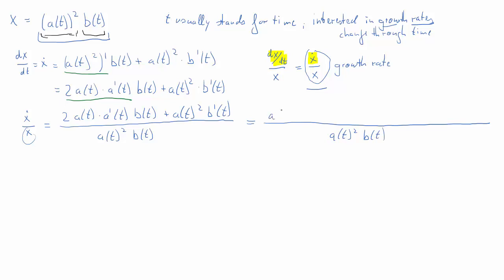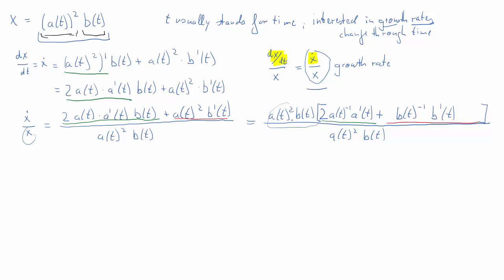We want to factor out a(t)² times b(t) from the denominator so we can cancel it. For the green term, what multiplied by the factored-out a(t)²·b(t) gives us back the original? That's 2·a(t)^(−1)·a'(t), since a(t)²·a(t)^(−1) is just a(t), and b(t) is already factored out. You may need to write that down to confirm.